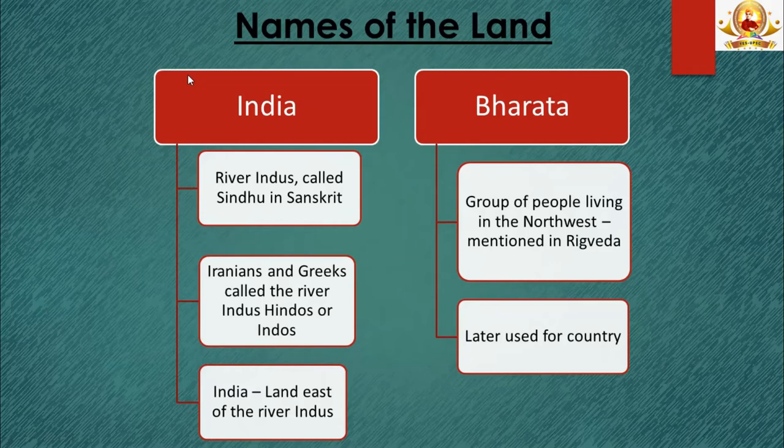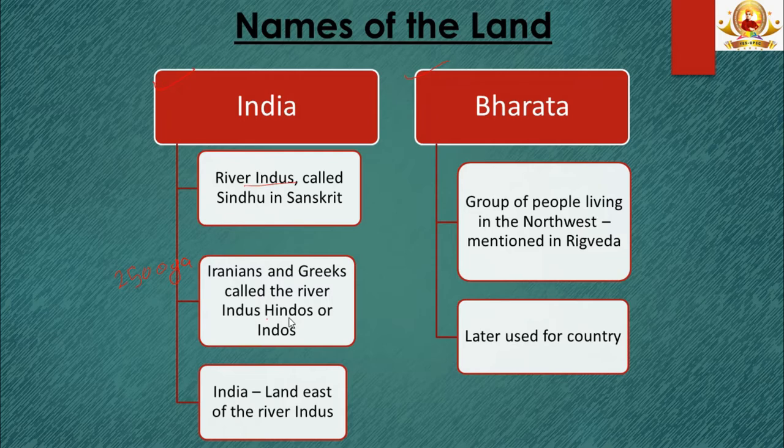Now let us see how our country got its name. Two words we often use for our country are 'India' and 'Bharat.' The word 'India' comes from the river Indus, called Sindhu in Sanskrit. The Iranians and Greeks, who came through the northwest about 2,500 years ago, called the river Hindos or Indos and the land to its east 'India.' The name 'Bharata' was used for a group of people mentioned in the Rig Veda, and later was used for the country.